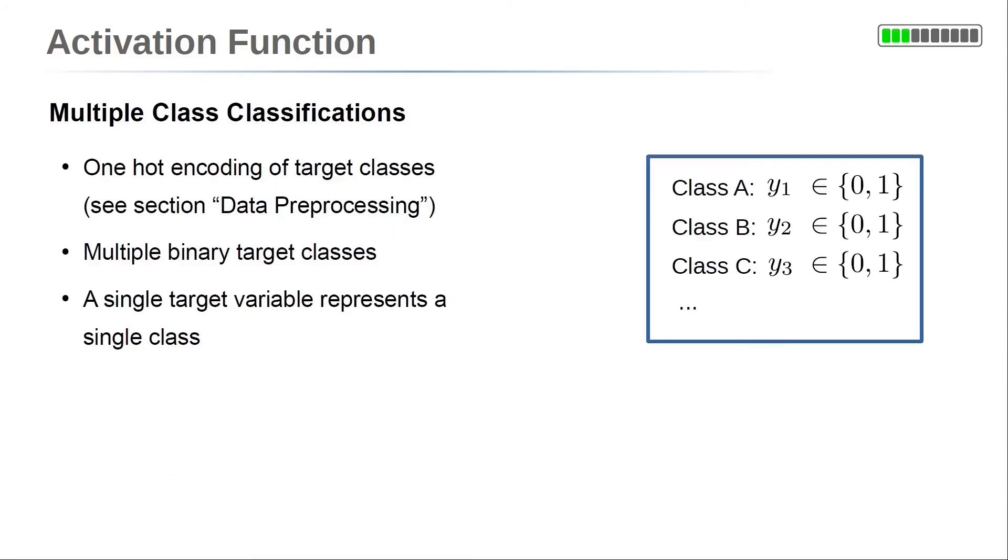To decide between more than two classes, one hot encoding of the target variable is used. This means we have multiple binary target variables and each of them indicates the presence of a specific class. A class is present means the y variable is 1 and if it's not present, the variable is 0.